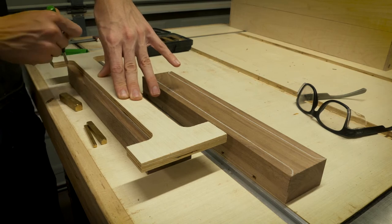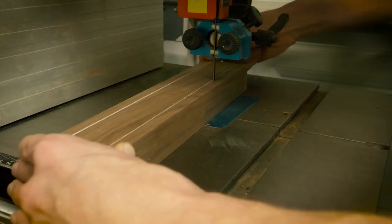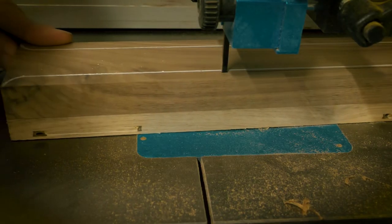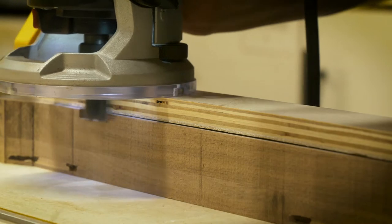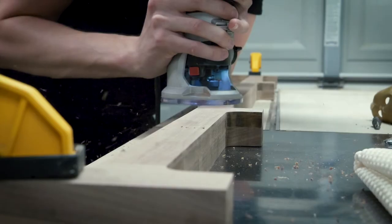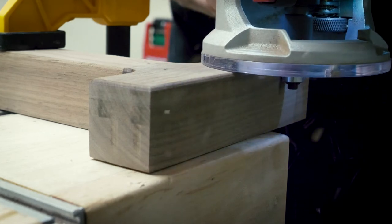For the leg stretchers I cut these to size roughly on the bandsaw and then used some templates to flush trim these as well. For the next step I used a round over bit to soften all my edges and I needed to use the round over before assembly because there were places I couldn't get the router once everything was put together.